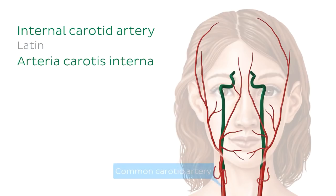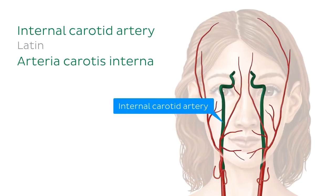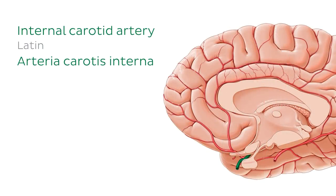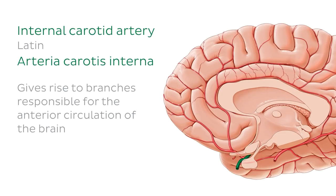So first I'll label the common carotid artery, which gives rise to the internal carotid artery that we can see highlighted in green. It also gives rise to another artery called the external carotid artery. Now that we've seen how the internal carotid artery looks in situ, let's move on to a medial view of the brain, where we can see the right internal carotid artery highlighted in green. The key part to remember here is that the internal carotid artery gives rise to branches responsible for the anterior circulation of the brain.